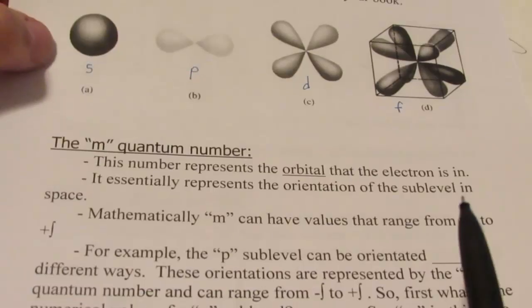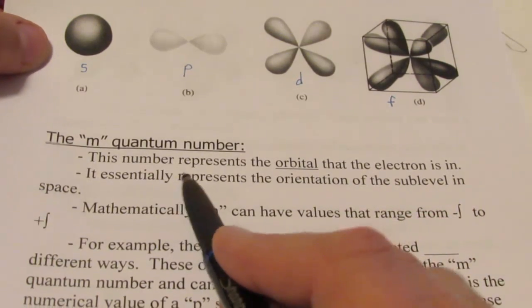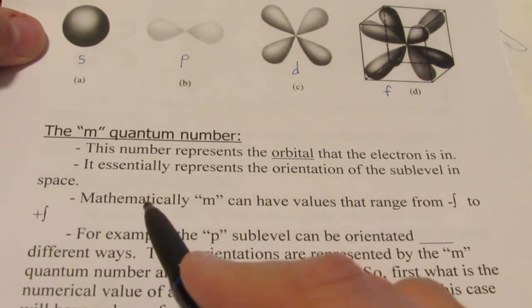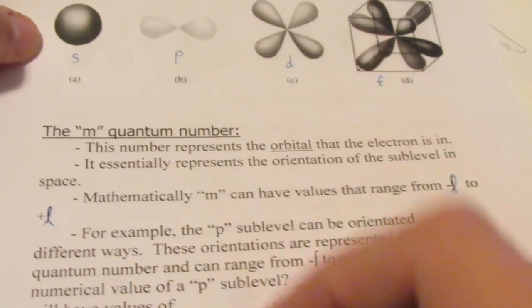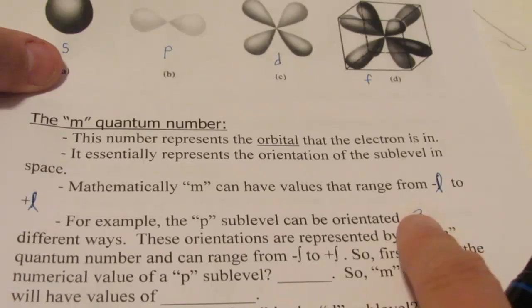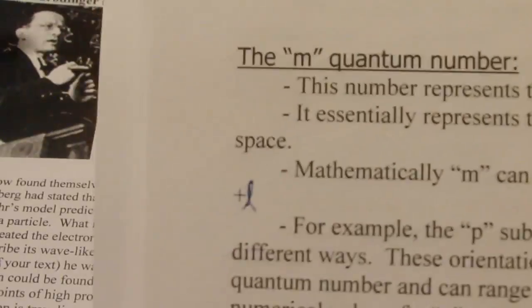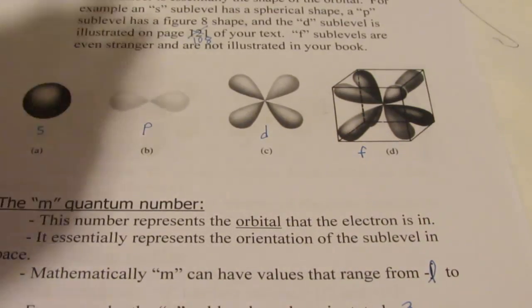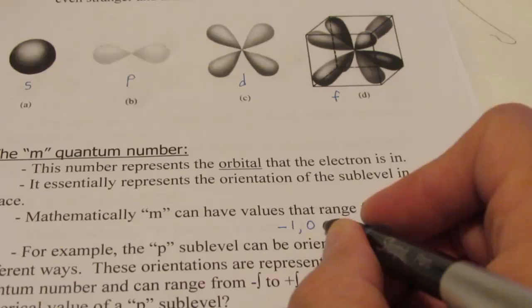Now that takes us to the M quantum number, sometimes called M sub L. This number represents the orbital that the electron is in — essentially the orientation of that sublevel in space. Mathematically, M can have numerical values ranging from the negative value of L to the positive value of L. For example, a P sublevel can be oriented three different ways. The P's numerical value is one, so M ranges from negative one to positive one — that's negative one, zero, and positive one, giving three different orientations.